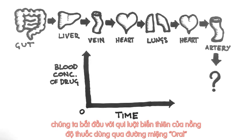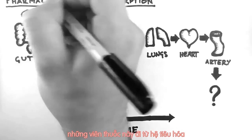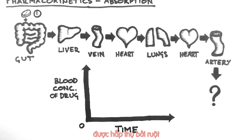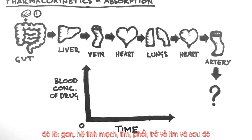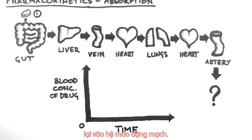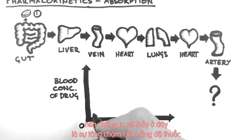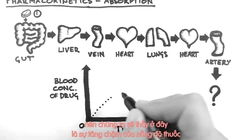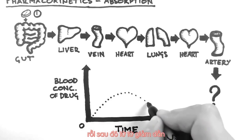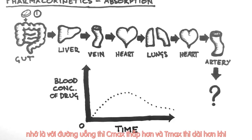We will begin with the most common route of drug administration, which is orally. These drugs move through the digestive system and get absorbed by the gut. Then they move through the whole system — the liver, the venous circulation, the heart, the lungs, back to the heart, and then to the arterial circulation. This takes quite some time, so what we see is a slow rise in blood concentration and then a slow fall. Note that the C-max is quite low and the T-max is quite large.